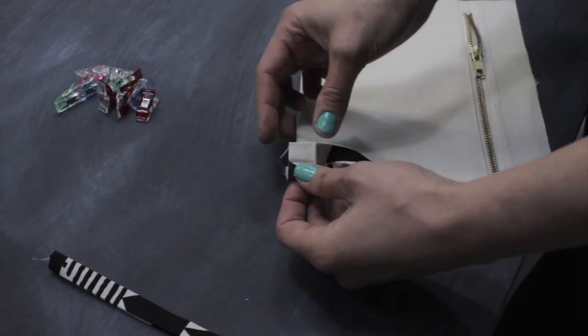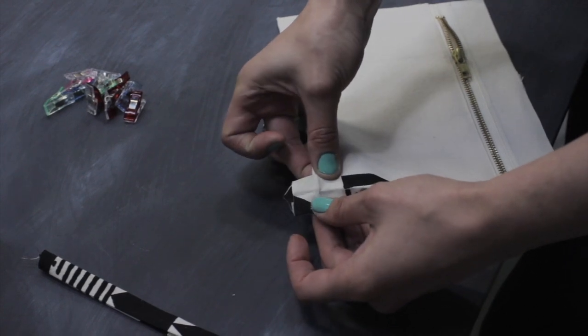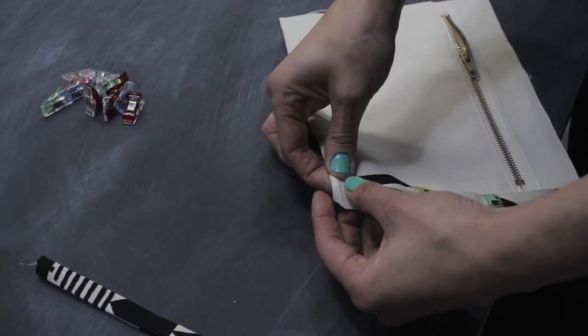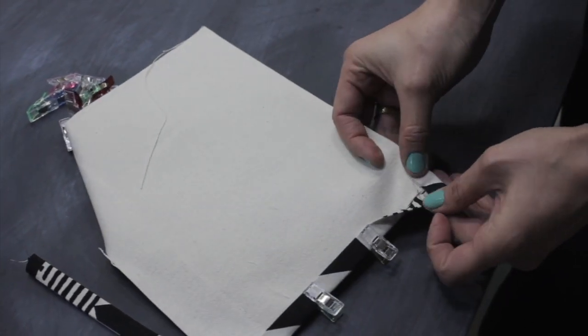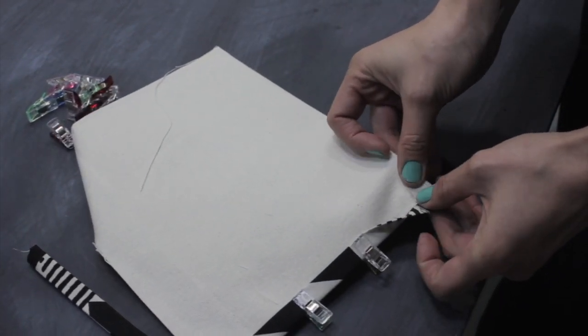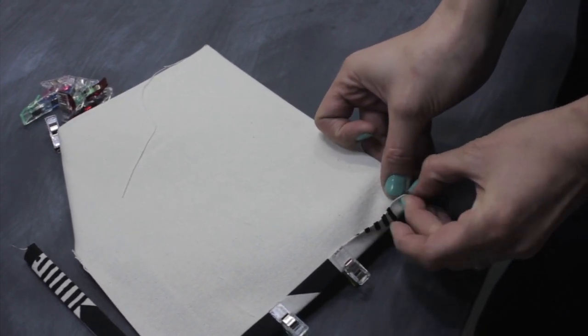Then we're going to open up this folded edge here and fold it up and around the bottom of the pocket. Tuck that raw edge into the fold on the back side.